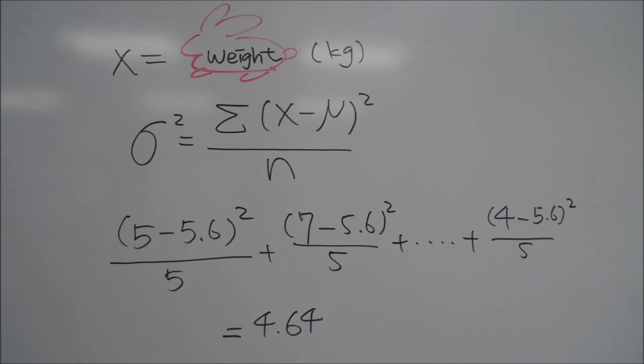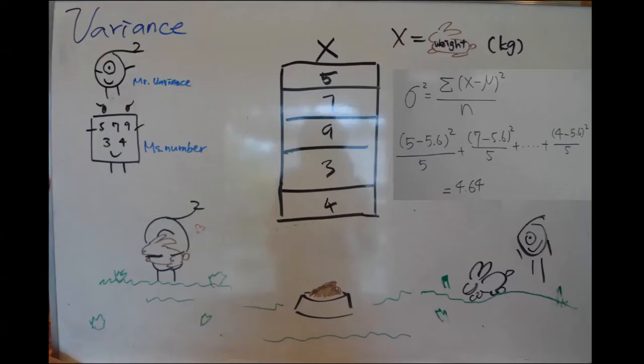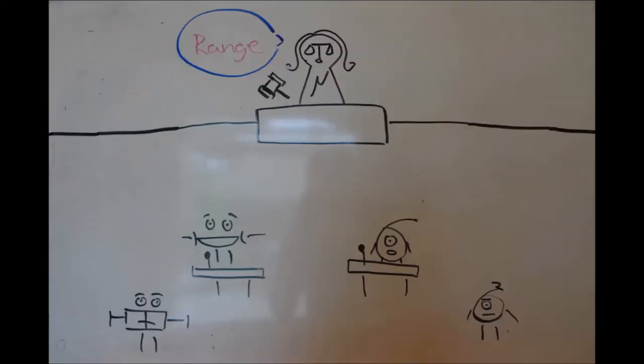We add up all this calculated value to get the variance, 4.64. As you can see, variance shows us how far the values are spread from the mean. As sample size increases, variance decreases. Thank you, Mr. Variance and Ms. Number. Mr. Range, now you may take the floor.